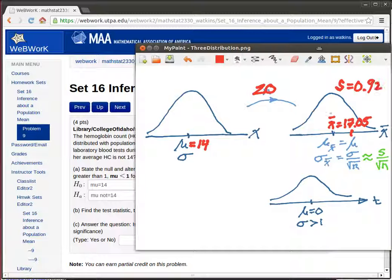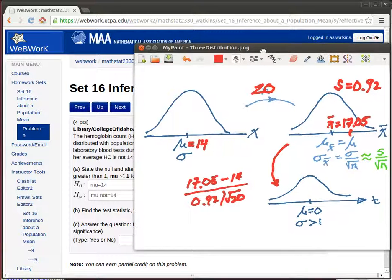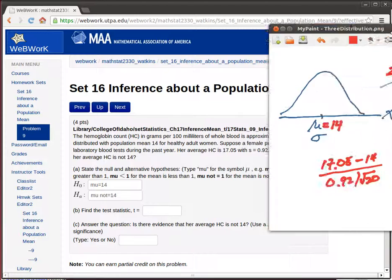So that's going to allow us to take her average and reproduce that down here as a t value. It's just going to be 17.05 minus the null hypothesis mean, divided by 0.92 divided by the square root of n which was 20. So what that's doing is counting the number of standard errors that her score is away from the null hypothesis mean.